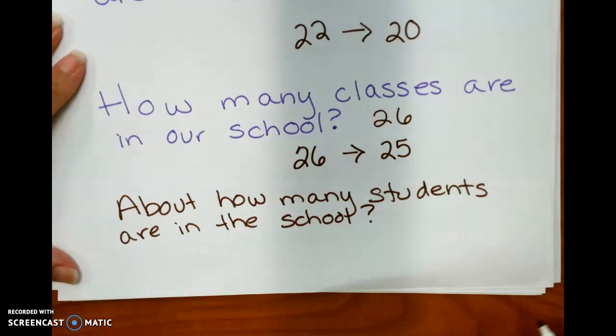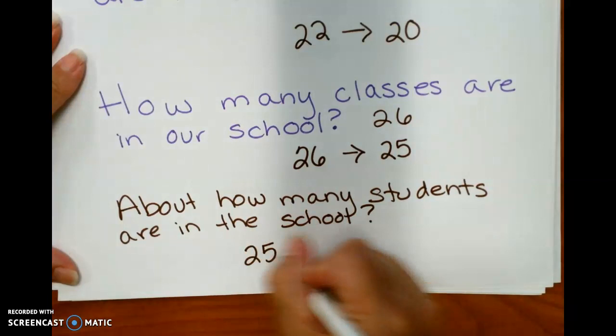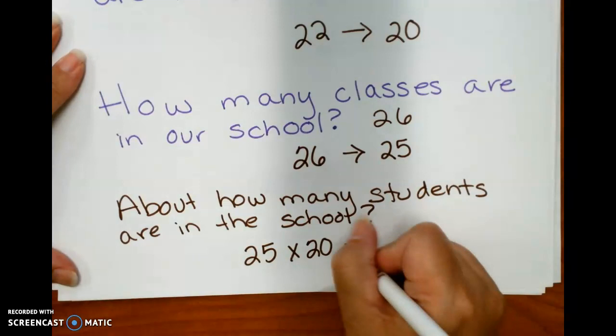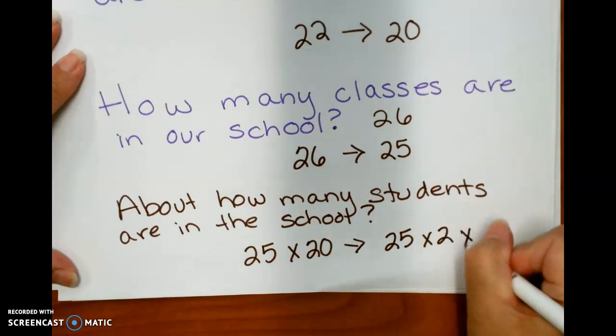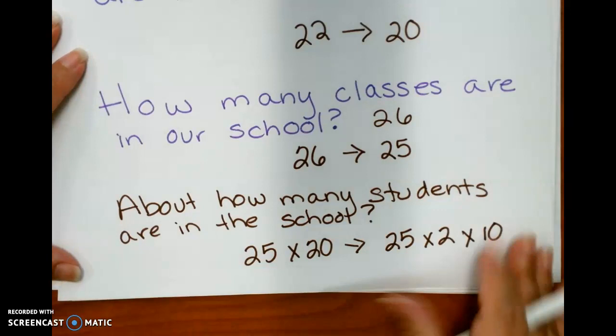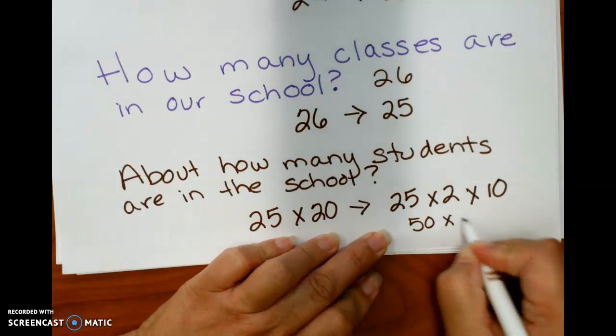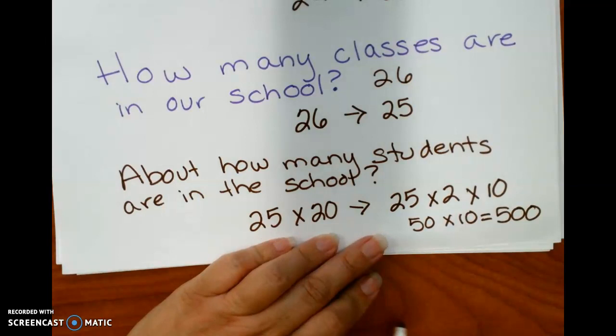So if I take 25 times 20, that is also the same as 25 times 2 times 10 because 20 is 2 times 10. So 25 times 2 is 50, and then times 10 gives me 500. So I can say there are about 500 students in Forest Hills.